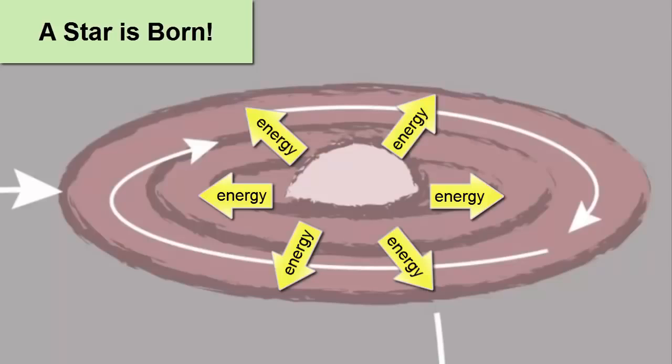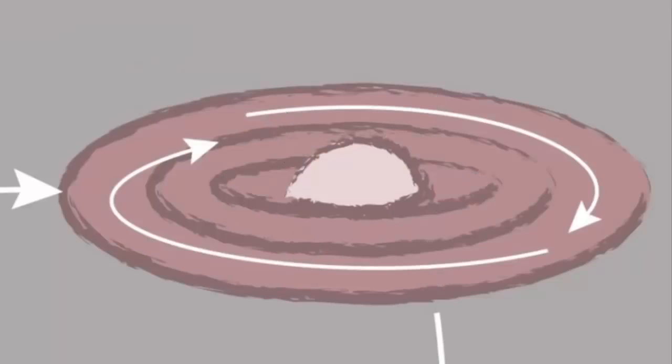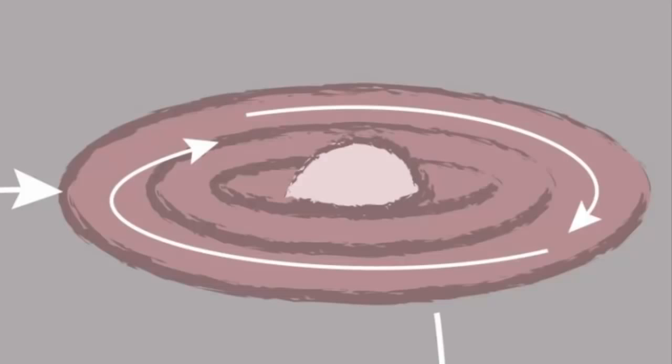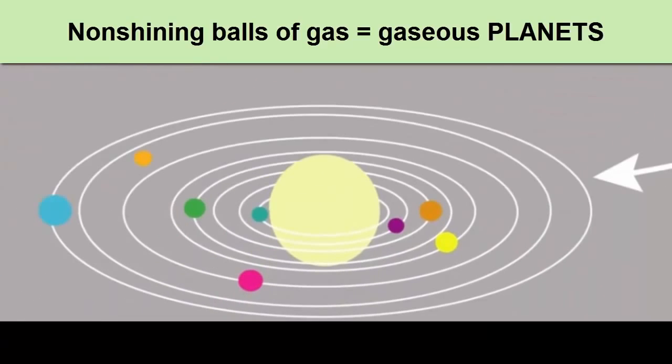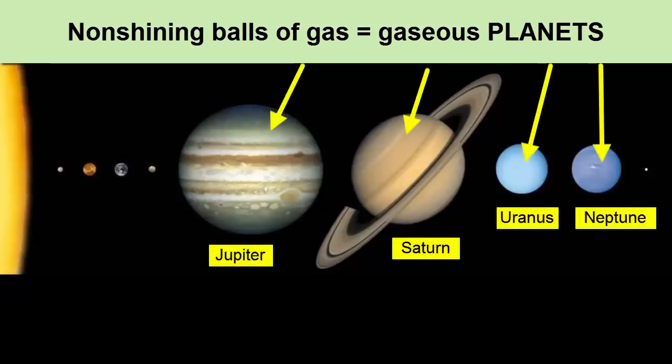These giant balls of shining gas are called stars. Back to the rotating disk, gas that is not part of the center star can go through similar collisions and accretion and create smaller, non-shining balls of gas that orbit the larger center star. These smaller balls with no nuclear fusion are called gaseous planets.